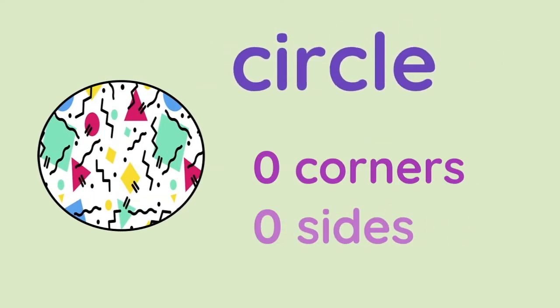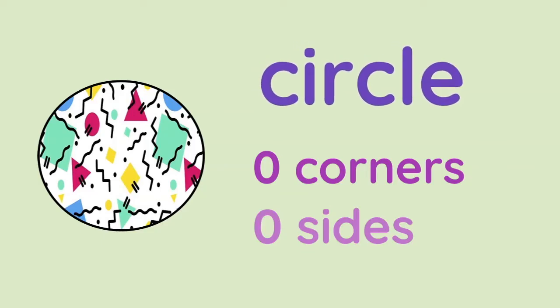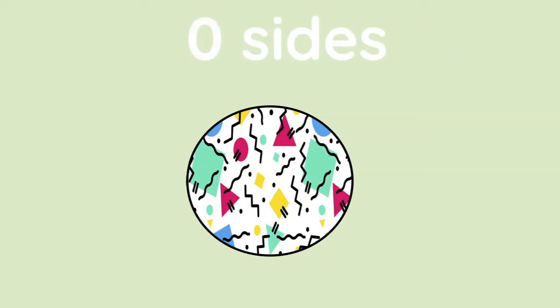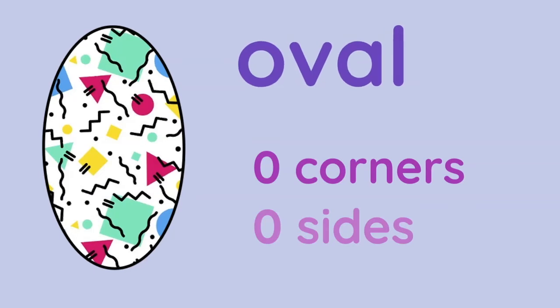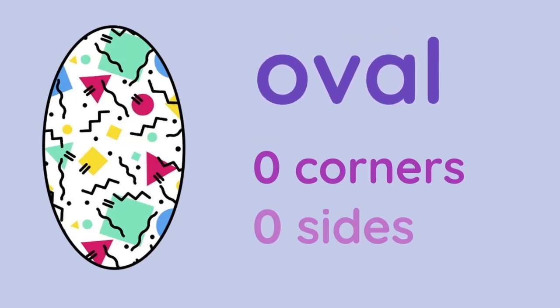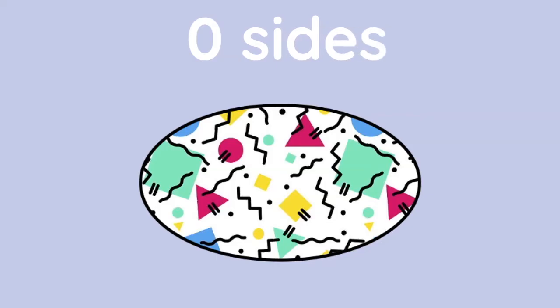Circle: zero corners, zero sides. Oval: zero corners, zero sides.